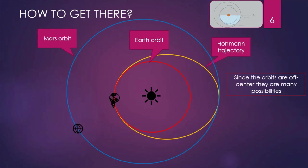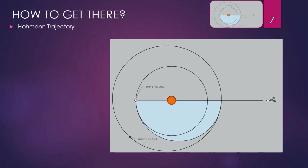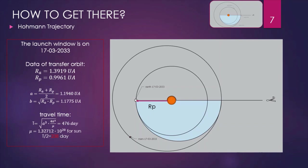Which one is the right one? Definitely we are looking for the one which is most convenient for us, and it means we need to find the condition when the aphelion is the minimum. We need to wait when Mars is occupying that position at the arrival date, when the Earth is laying on the opposite position at the launching date. This condition is happening very seldom — more or less every 15 years. The next launch window will be on the 17th of March 2033.